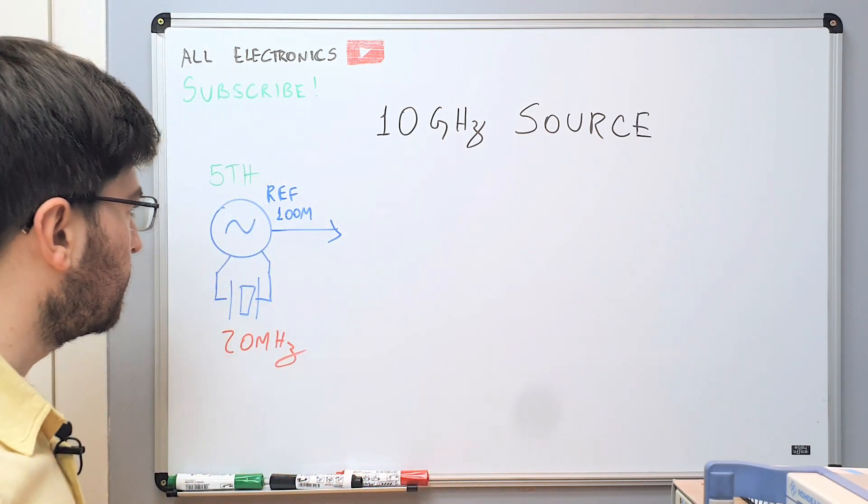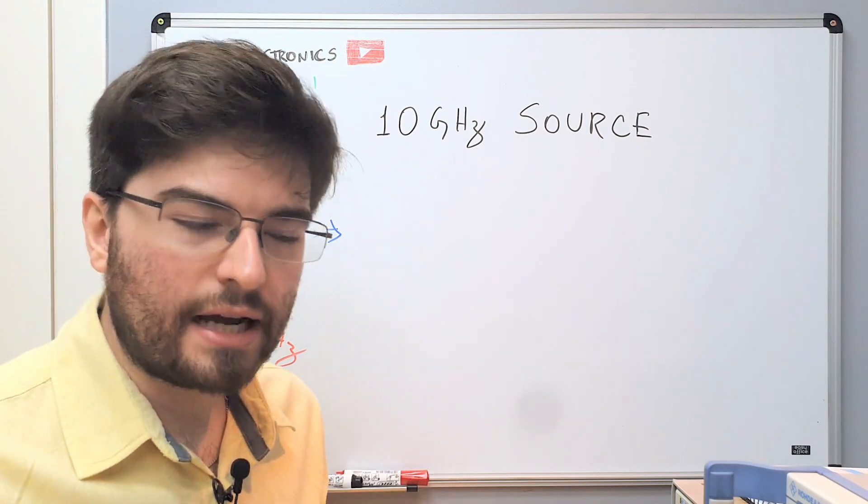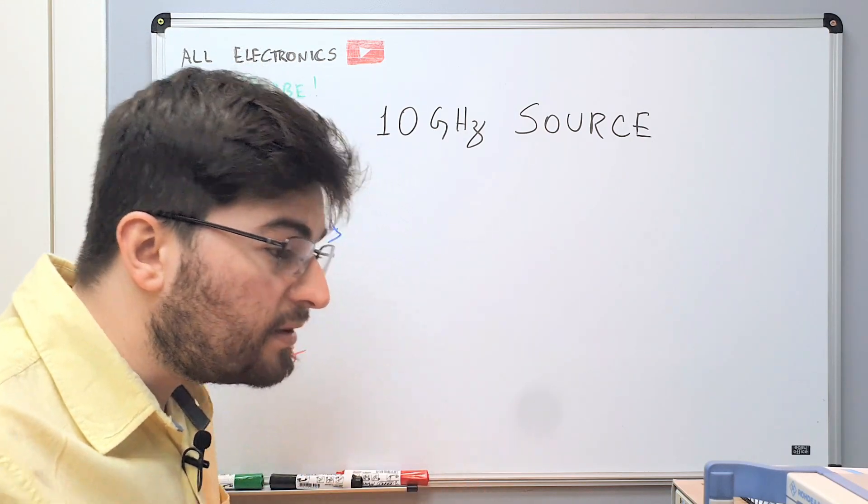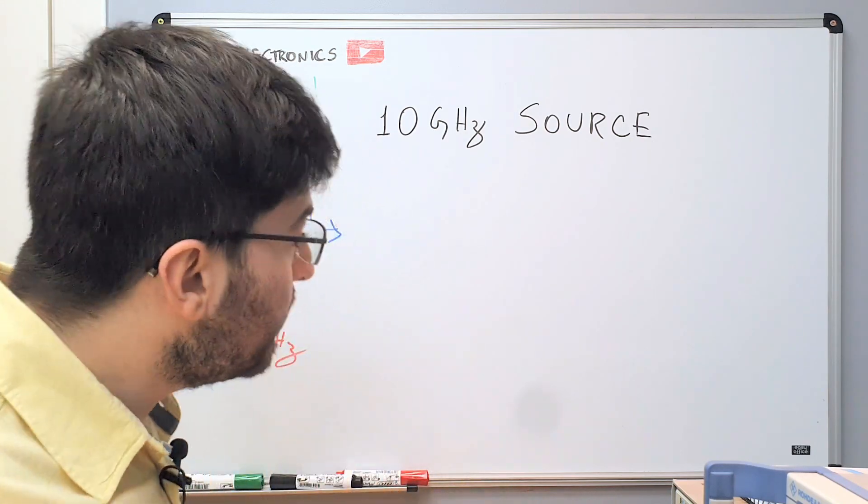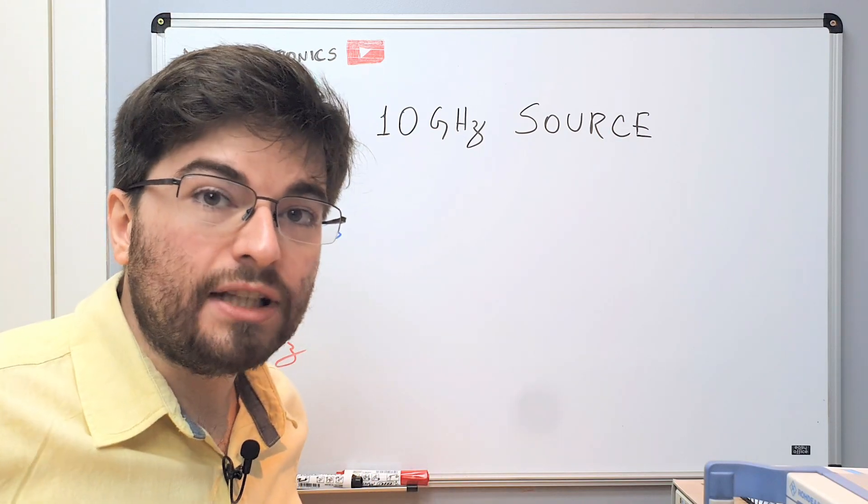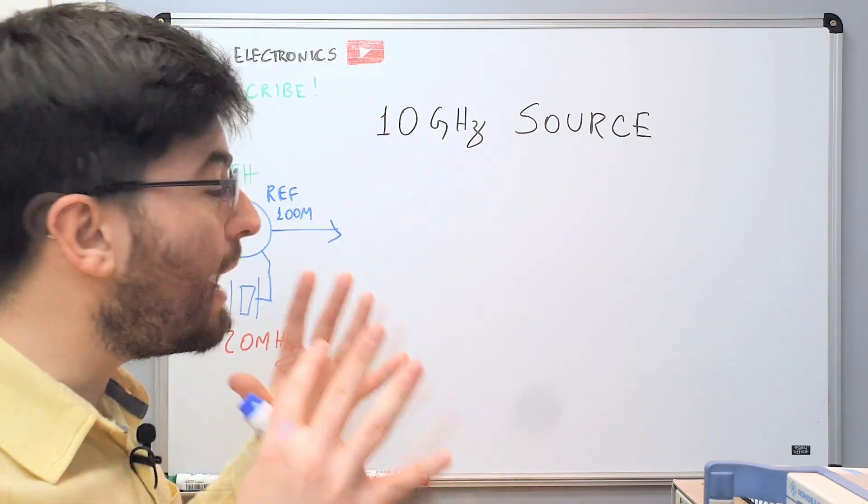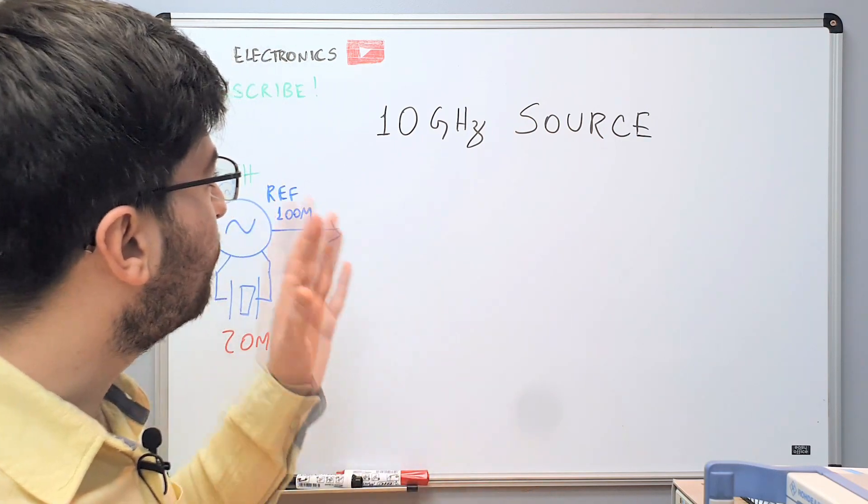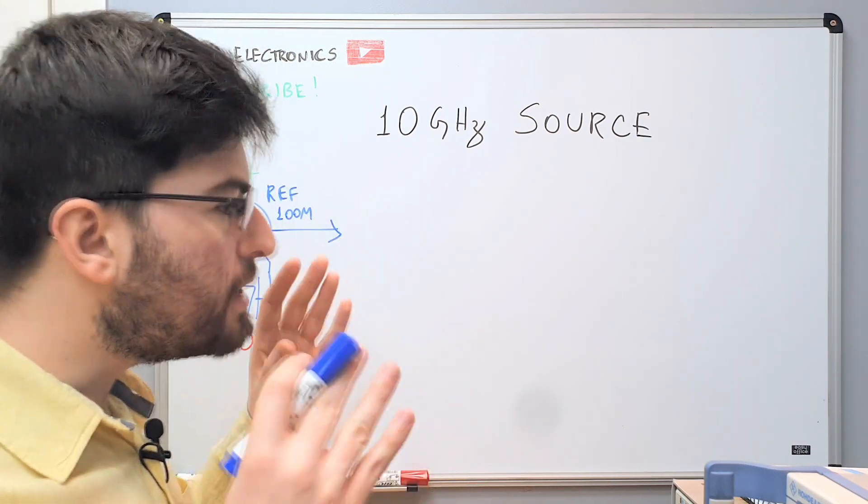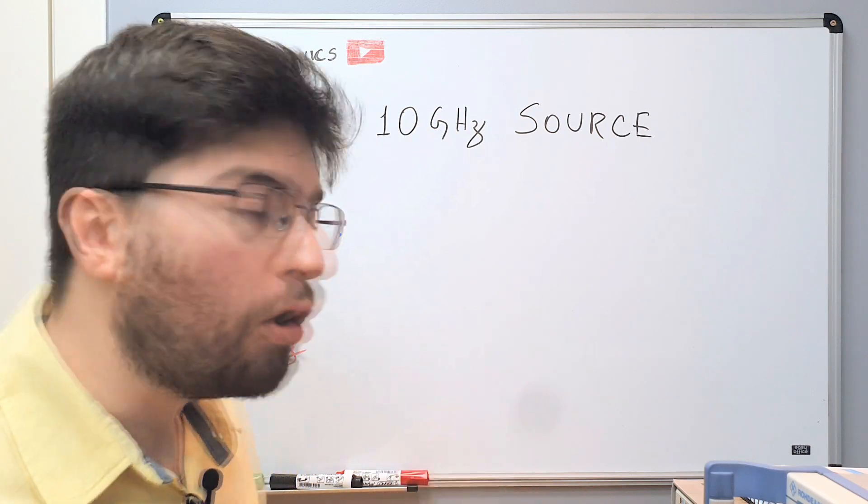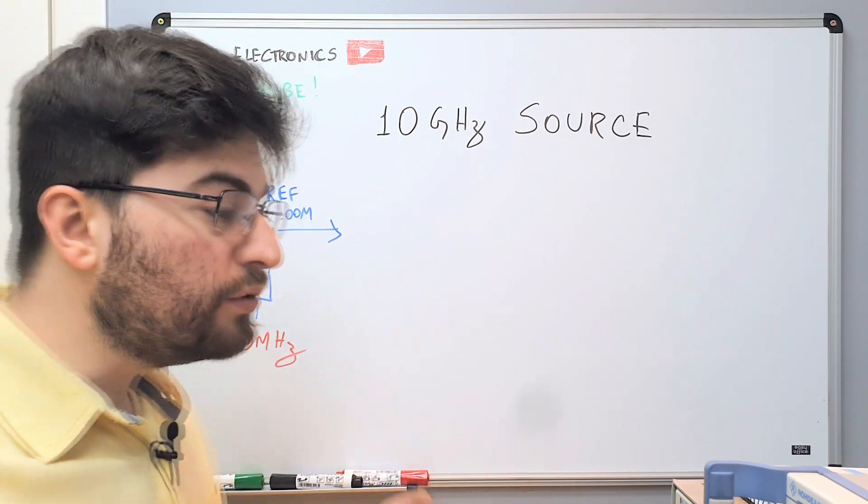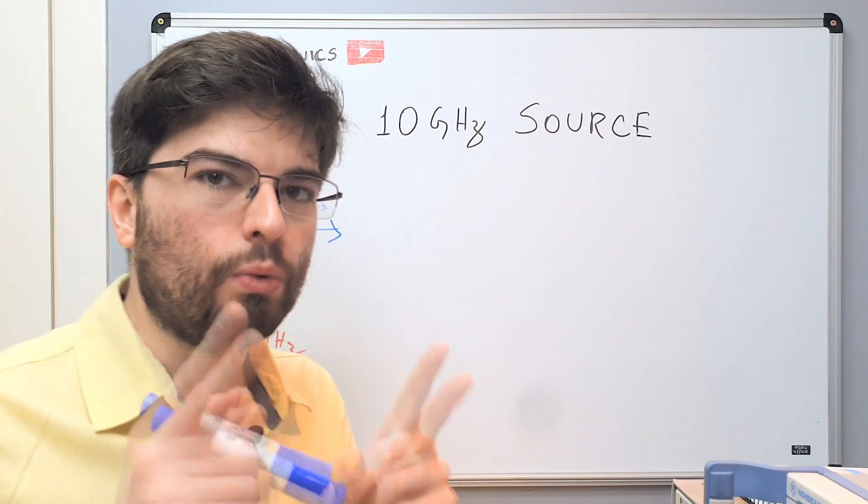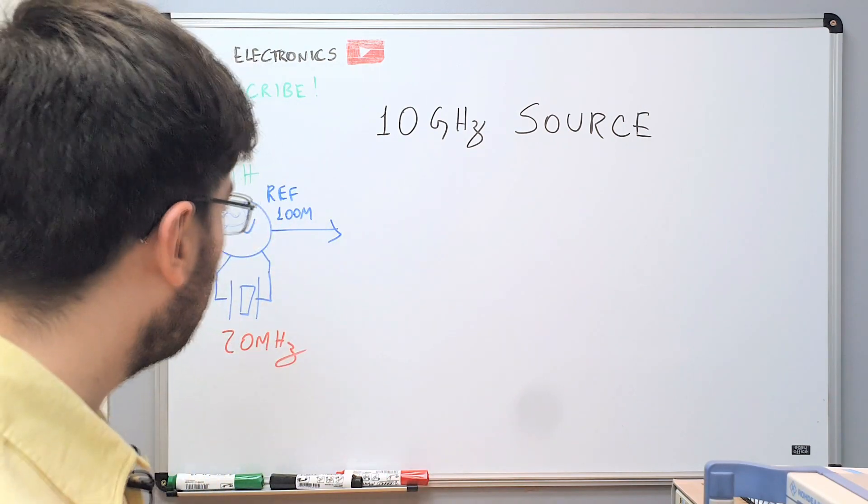My idea here is to not use pre-scalars. I don't want to use pre-scalars because I don't like pre-scalars, and we can learn more using a different approach. So my idea here is to use a VCO running at 5 GHz and we are going to phase lock the VCO to the reference using a sampler. Let's see what is the topology of the sampler.